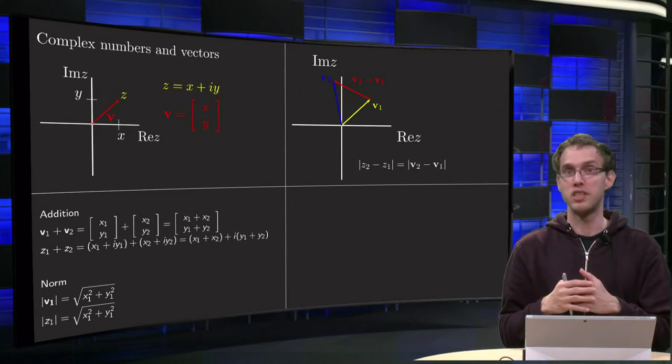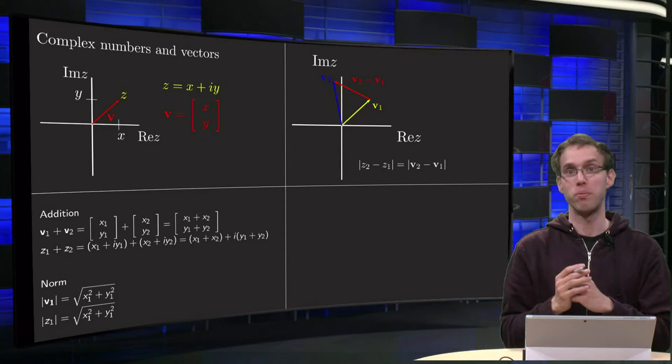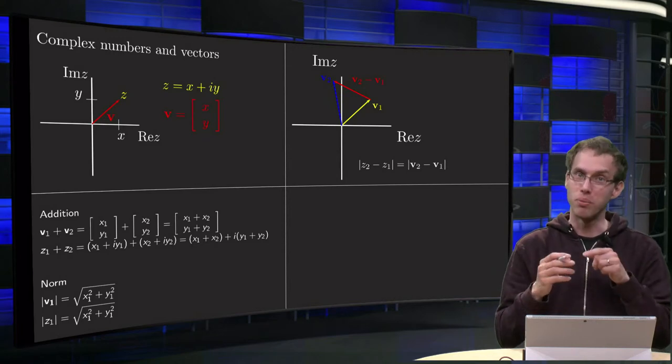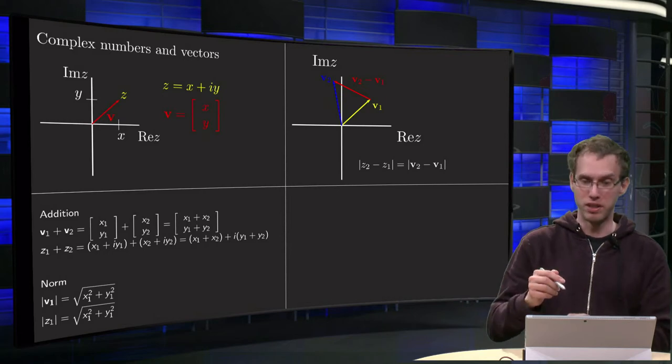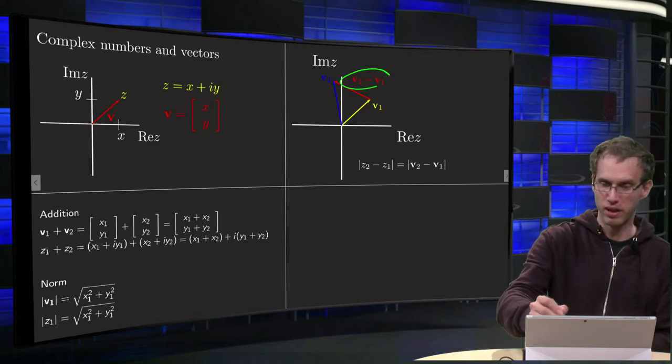So what does this tell us? If you have two complex numbers, z1 and z2, we can view them as two vectors, v1 and v2, and then the vector of the difference, v2 minus v1 over here.